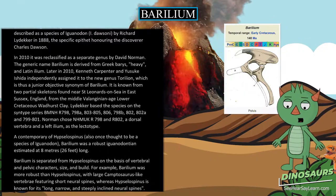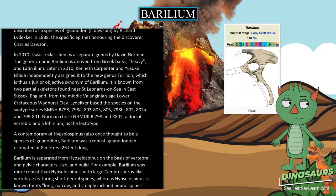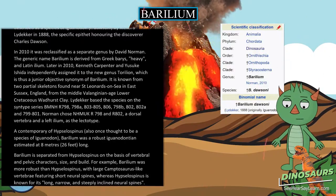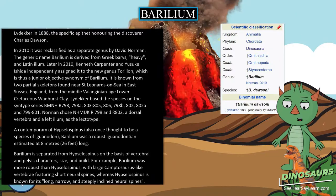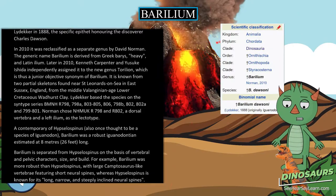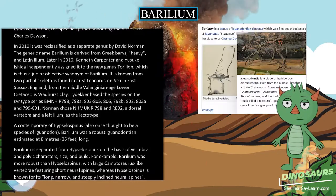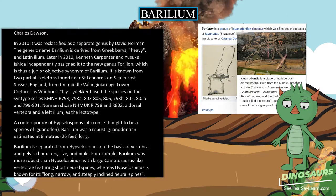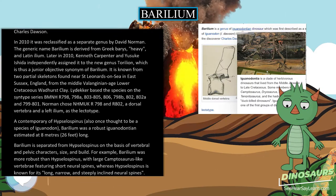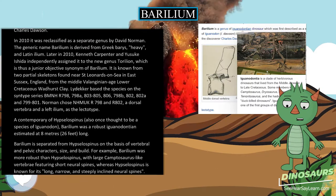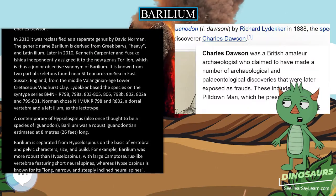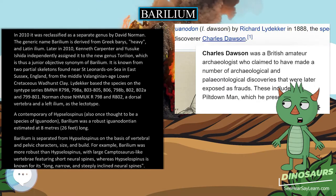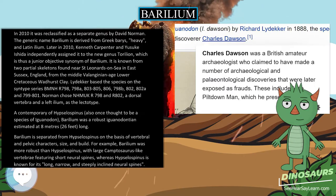A contemporary of Hypselospinus, also once thought to be a species of Iguanodon, beryllium was a robust Iguanodontian estimated at 8 meters long. Beryllium is separated from Hypselospinus on the basis of vertebral and pelvic characters, size, and build.